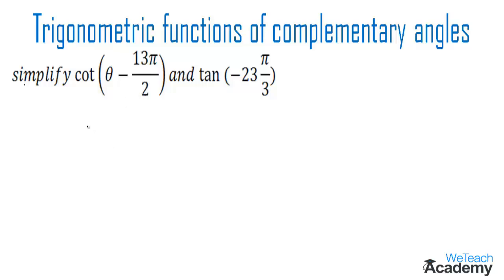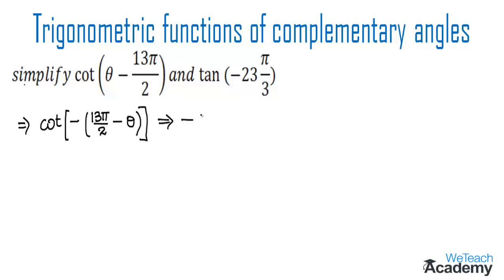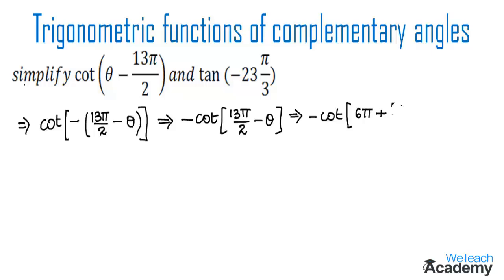We can write cot(θ − 13π/2) as cot(−(13π/2 − θ)). This is in the form of cot(−θ), so we get the result as minus cot(13π/2 − θ). We can then write 13π/2 in the form of 6π + π/2, giving us minus cot(6π + π/2 − θ).